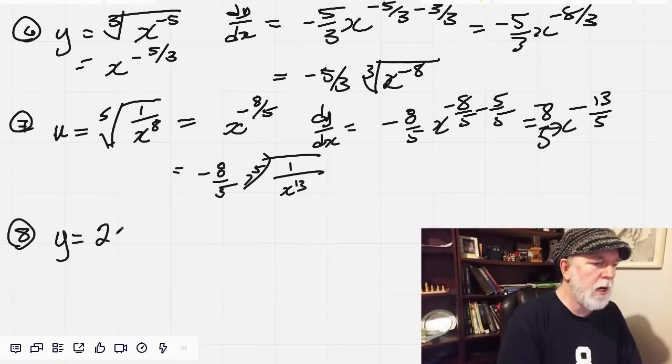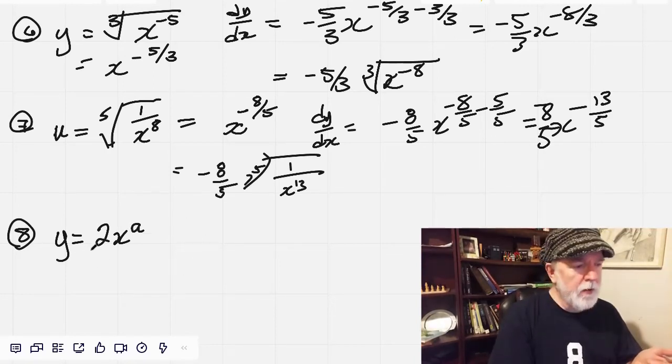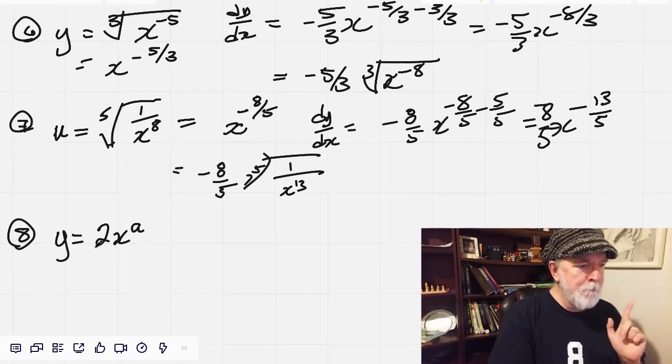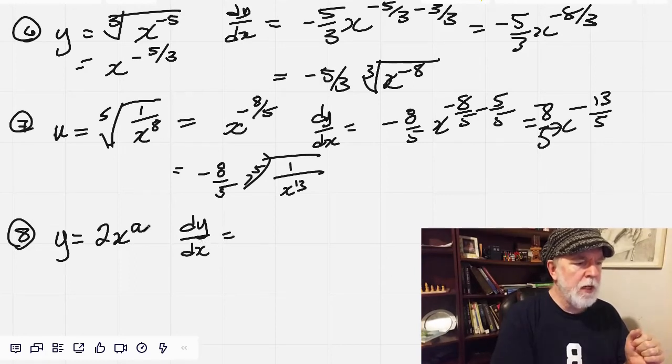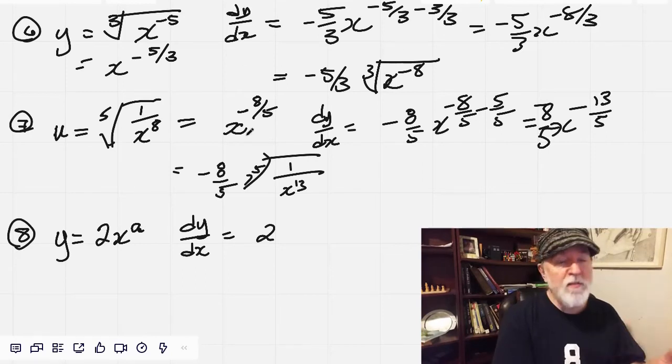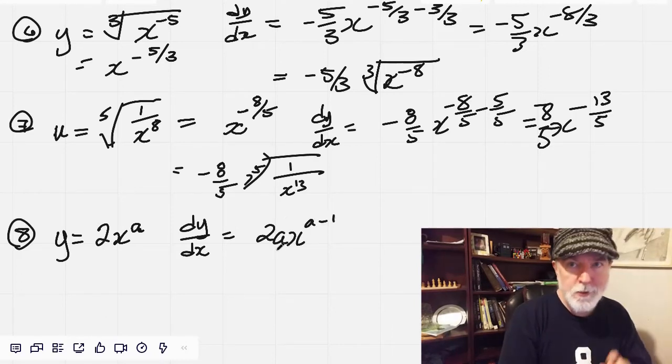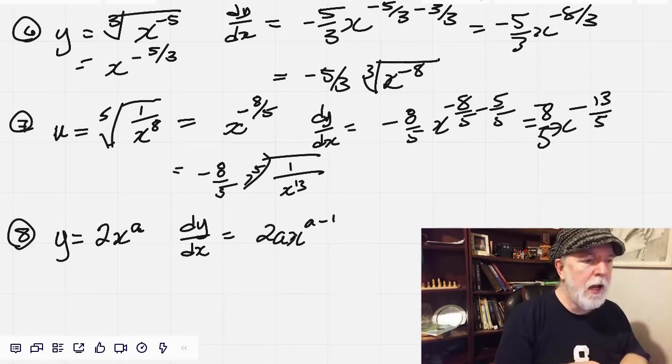y equals 2 times x to the power of a. This is a bit of a curveball, because now we've got something in front of the x, which I don't know that we covered in the previous video. dy by dx equals, so that 2 stays as 2. And then what we're actually doing is we're taking this exponent and multiplying it by the coefficient. And that's always what we've been doing, but the coefficient has always been 1. So we've got 2a x to the a minus 1. So that is a more complete definition of the rule, is we're taking the exponent and multiplying it by the coefficient.